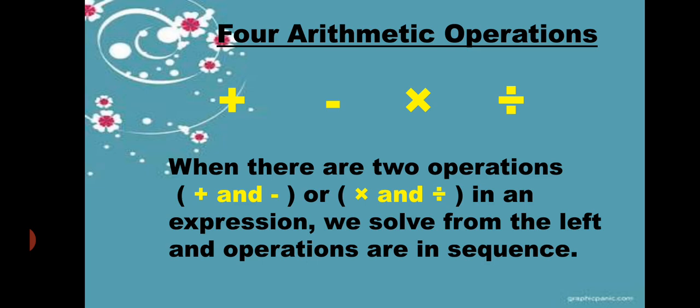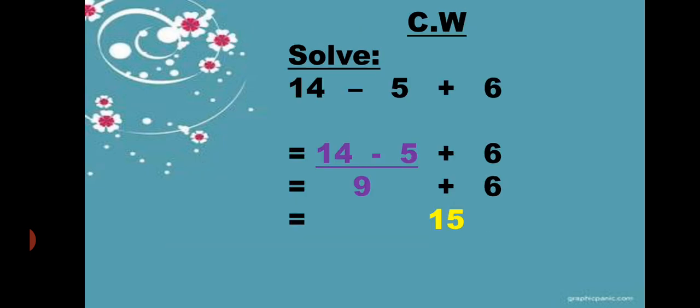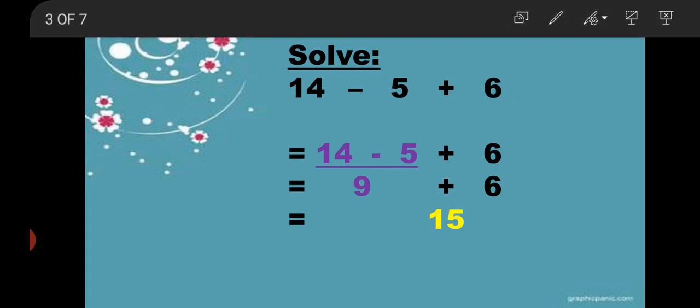Here we have our classwork and our question here is 14 minus 5 plus 6. Now I'm going to solve it students. You can see here the first operation is minus and the minus sign is between 14 and 5, so we will first solve subtraction.